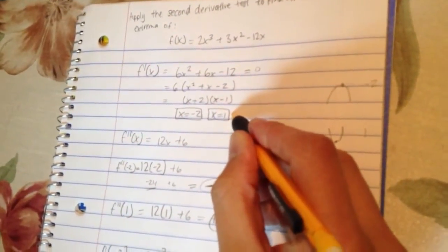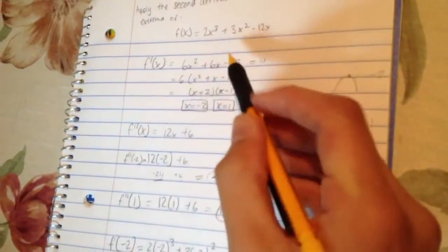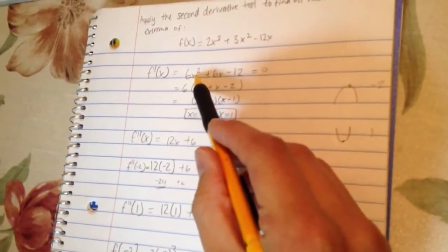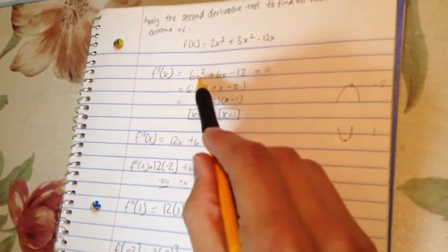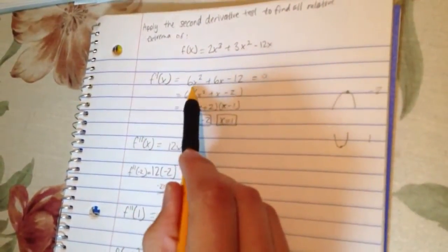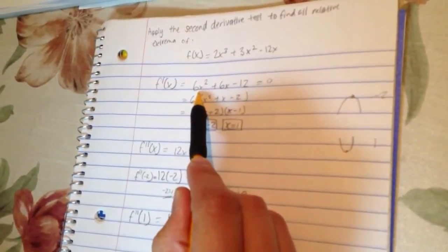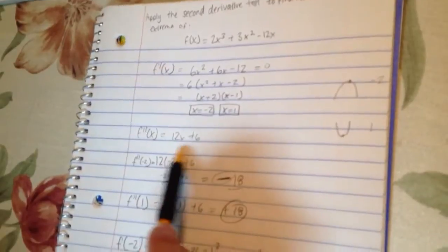So once I found my critical points, I will do the second derivative, and you do that by doing the same process, taking the derivative of this equation right here. So when you do that, you're left with 12x plus 6, and that's what I wrote right here.